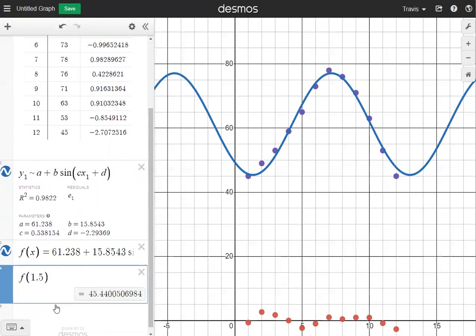Okay, so now I'm going to let X be 1.5. And when I do that, I get 45.44005 and some more decimal places. But I'm going to round that to the nearest whole number, which would be 45. So that's how you do a sinusoidal regression.